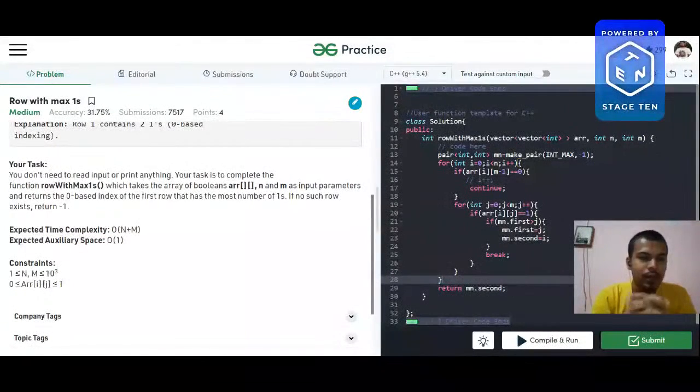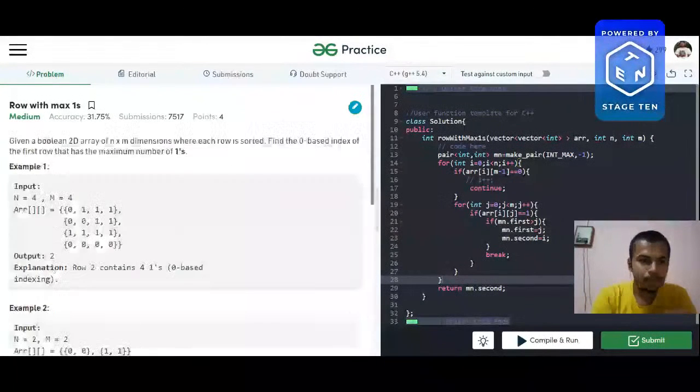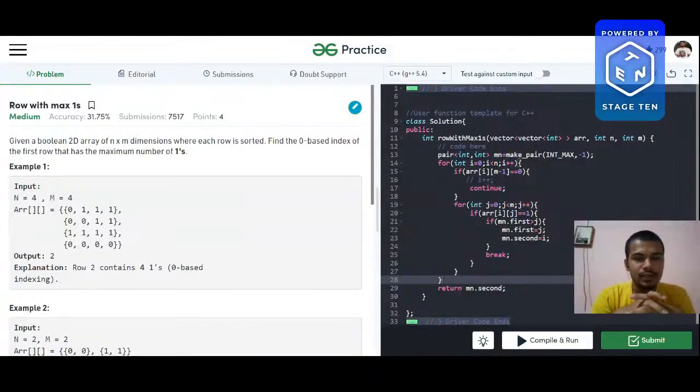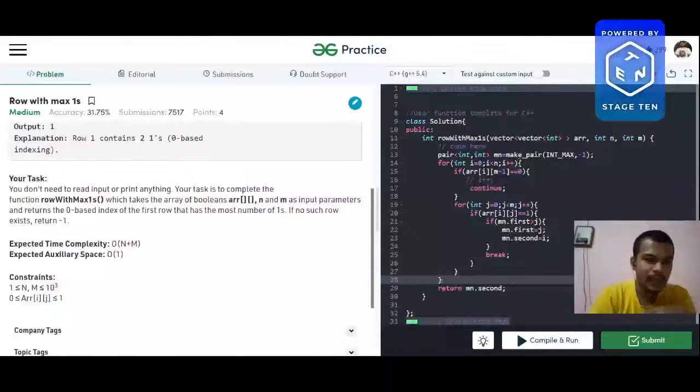So the very brute force approach would be to traverse the whole matrix and find the sum of individual rows. The row which has the maximum sum, we can say that it has the maximum number of ones. That is one approach and as one can notice, it has a time complexity of n into m, which is not viable as we have to do it in n plus m.